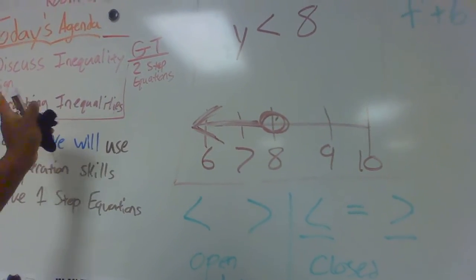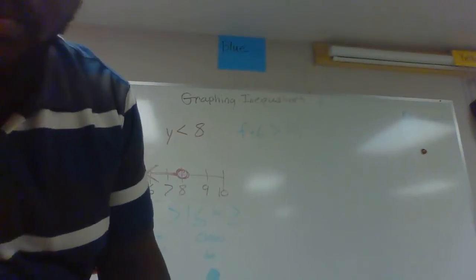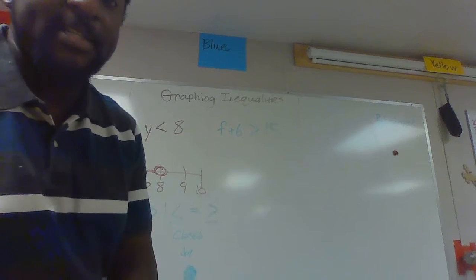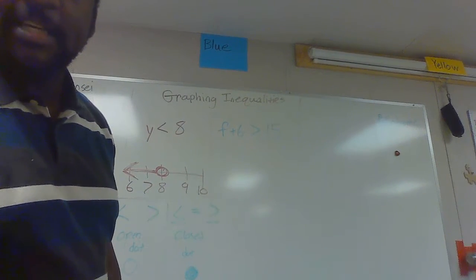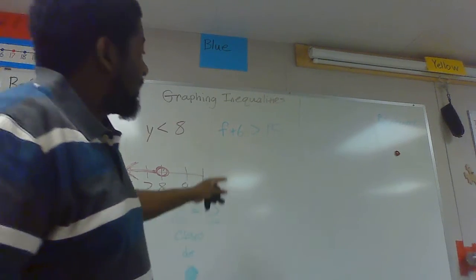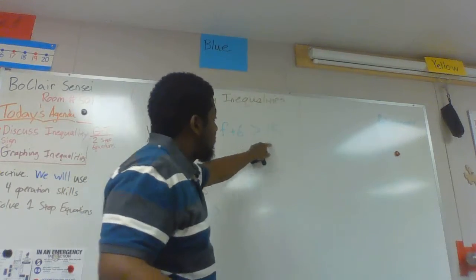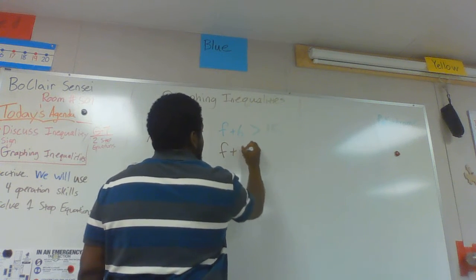Today we're graphing one-step inequalities, which means we have to use our one-step equation practice that we did last week. Starting off, I have f plus 6 is greater than 15. I'm gonna rewrite that because that green is kind of hard to see.